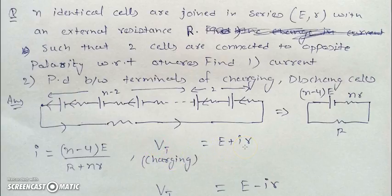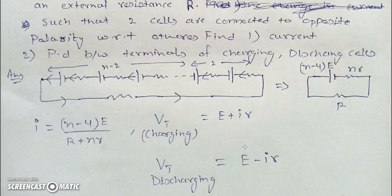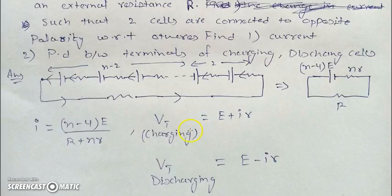From the circuit diagram, the terminal voltage of charging cells is V = E + ir, while the terminal voltage of discharging cells is V = E − ir. This clarifies the general EMF and terminal voltage for cells in charging and discharging conditions.